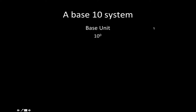The metric system is a base-10 system. So whatever the base unit is — a gram, a liter, a meter, a joule, or whatever — it's a base-10 unit. Ten to the zero power, like anything, is 1, and then it gets bigger or smaller from there.